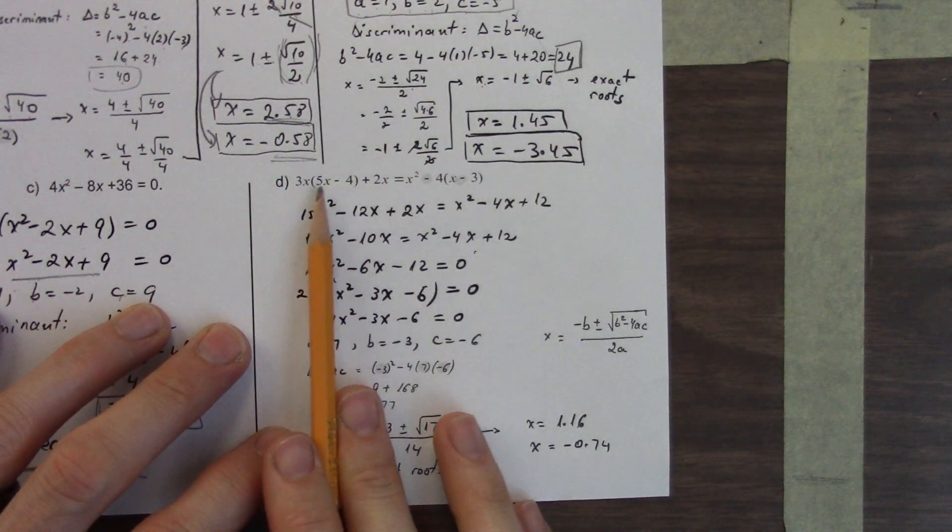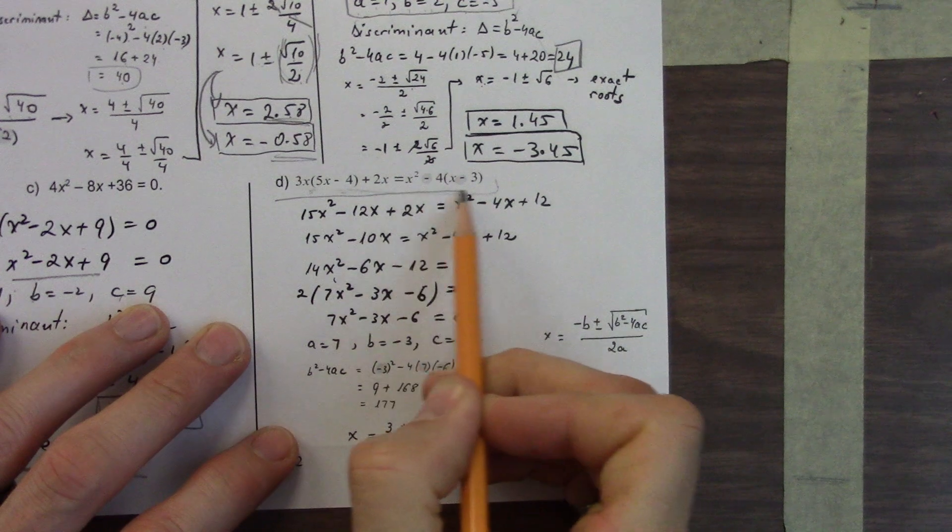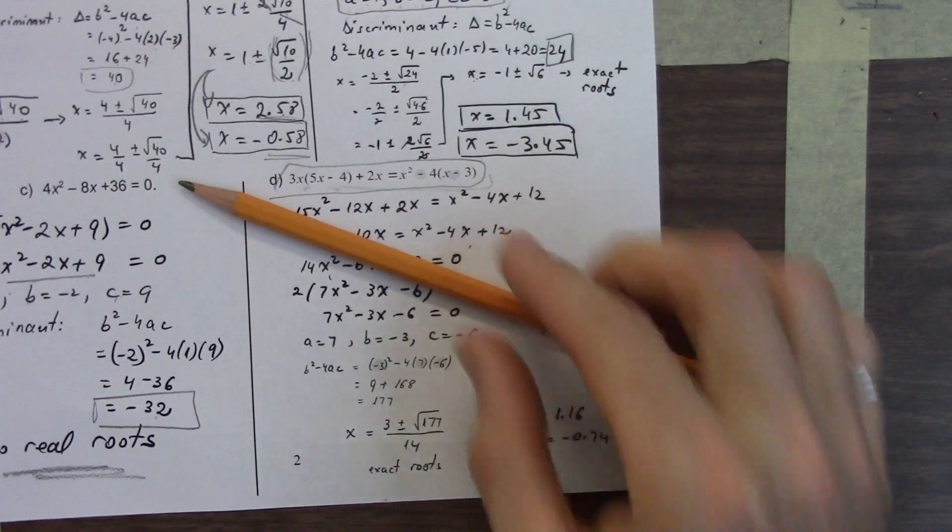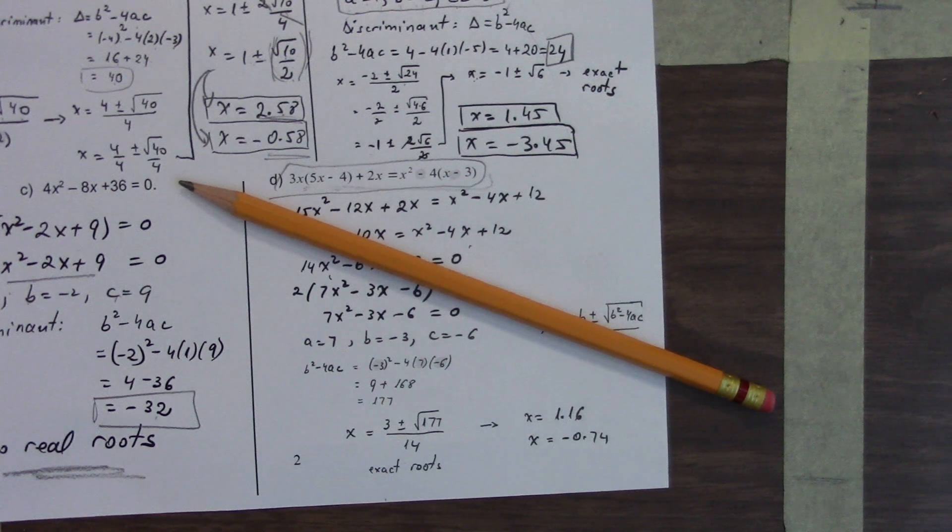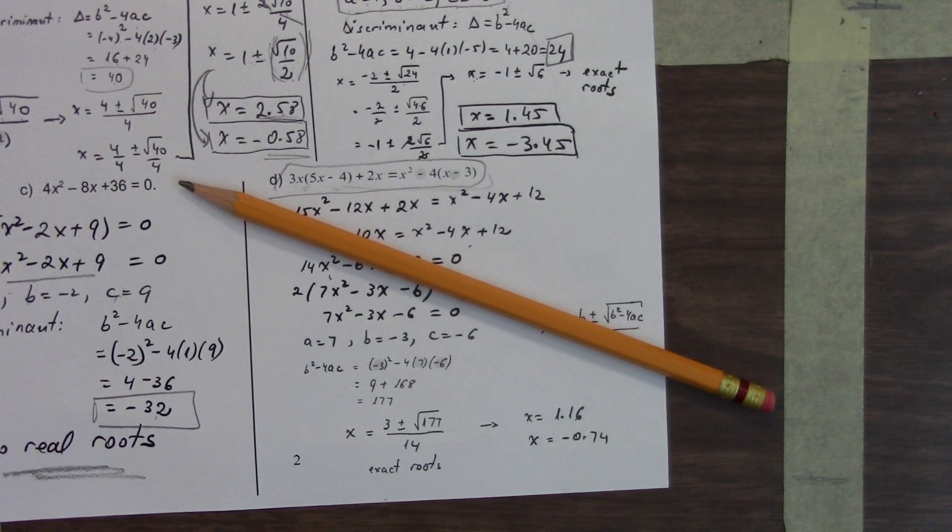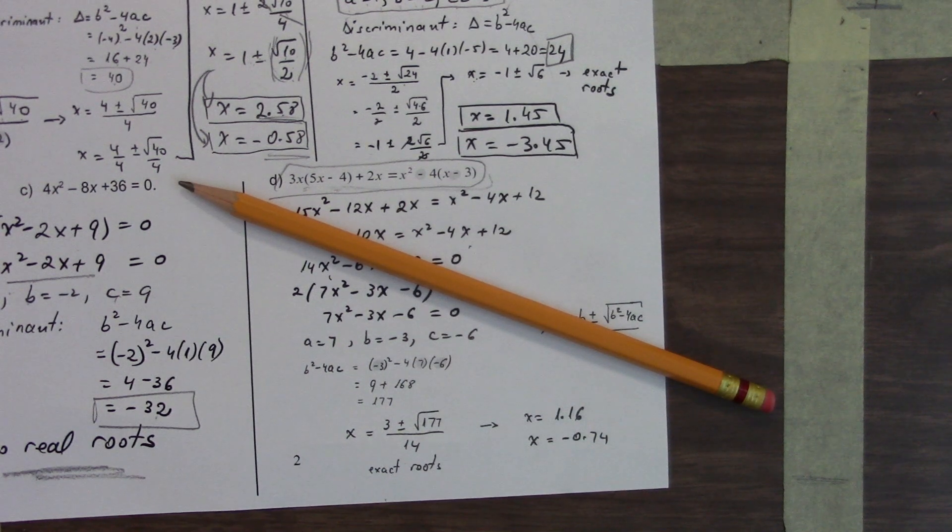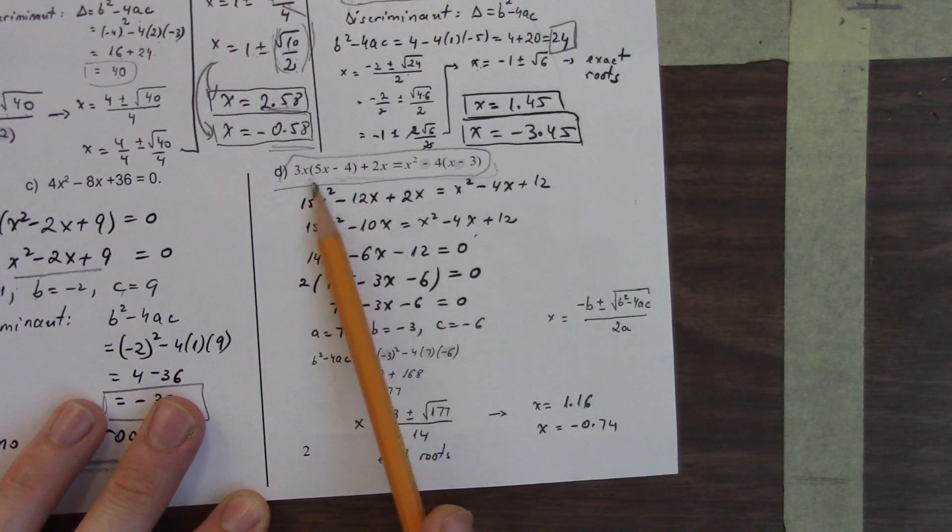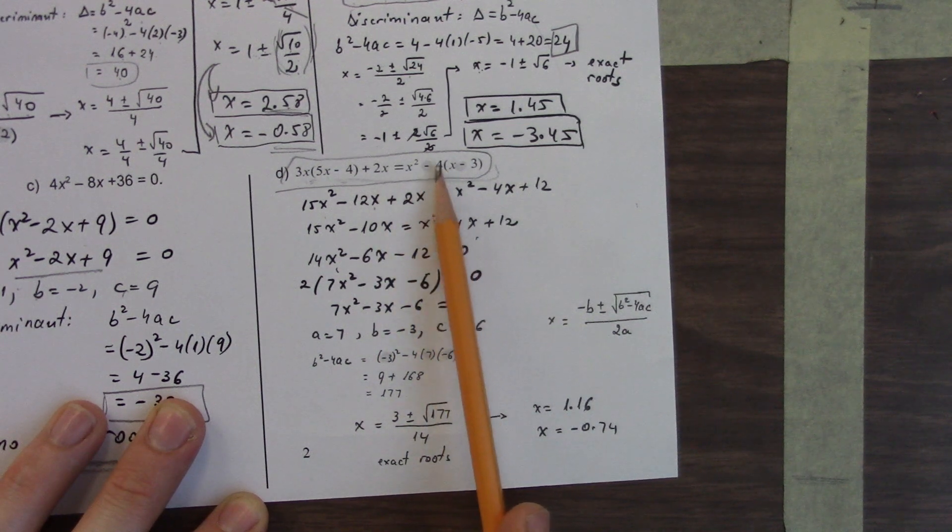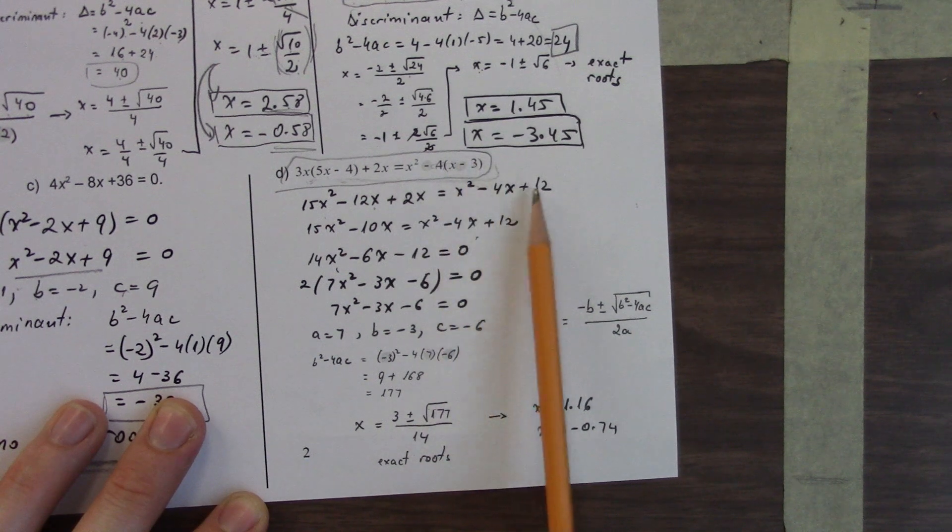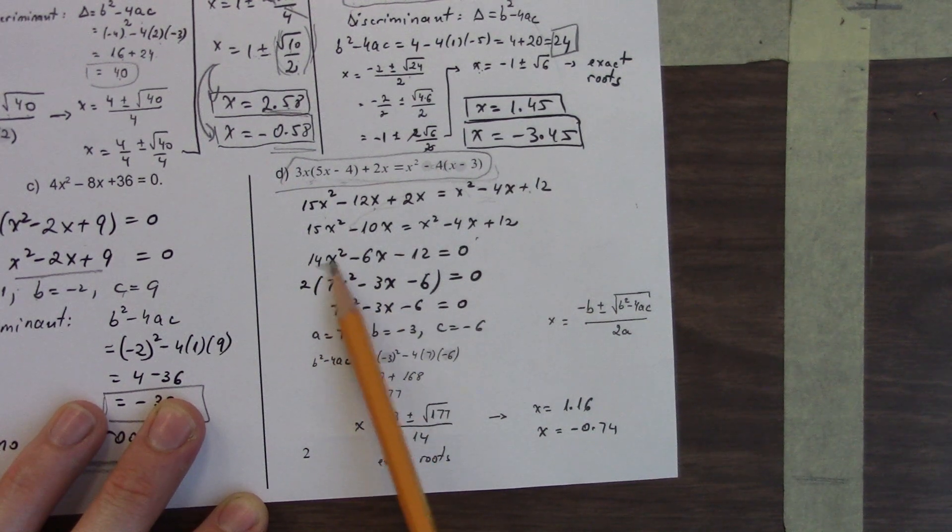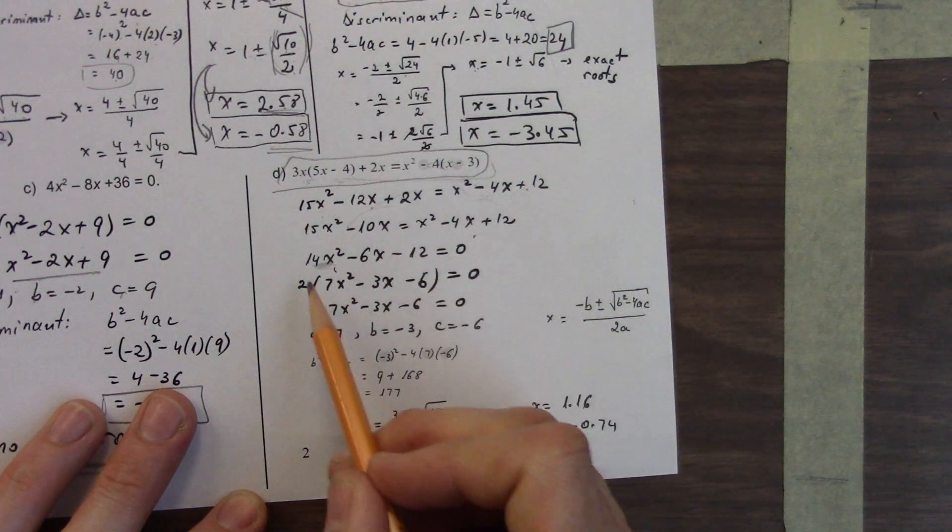This one is a crazy example. Look at everything that's going on here. Anyone have any ideas of what we could do to solve this? When you have something like this, you need to multiply everything out, gather the like terms, and put it all back into standard form. So we're just dealing with this as it comes. 3x times 5x is 15x squared. 3x times negative 4 is negative 12x. Plus 2x is on the outside. x squared minus 4x. Minus times minus 3 is plus 12. And then we just gather the like terms.